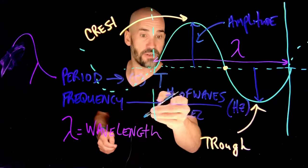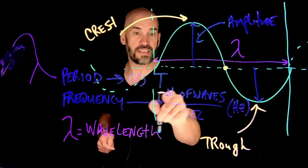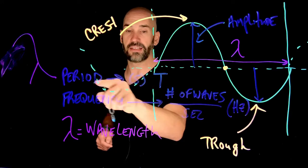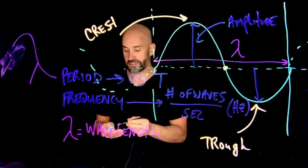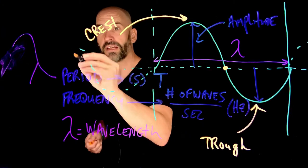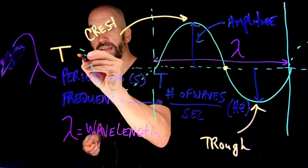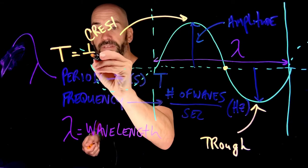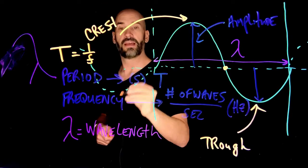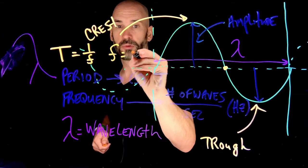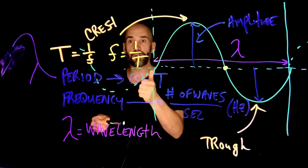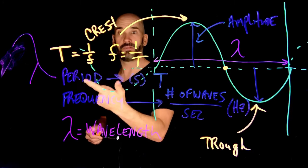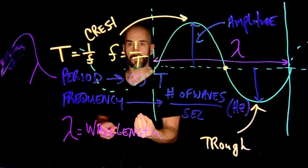Now, you can see here that frequency is the number of waves per second, and the period is the number of seconds per wave. So that means period and frequency are simply the inverses of each other. Period given by T is just equal to 1 over F, the frequency. And frequency is equal to 1 over the period. So you can always find frequency if you have the period, and you can always find the period of a wave if you have frequency.